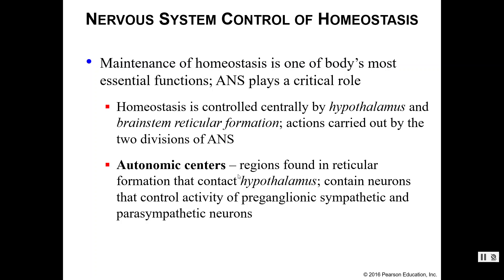Within your reticular formation you have autonomic center regions. They are what are contacting the hypothalamus directly. These neurons control the activity of your preganglionic neurons for both your sympathetic and parasympathetic divisions. These autonomic centers in the reticular formation will communicate with the hypothalamus and send the plan through the preganglionic neurons, whether it be the sympathetic branch or the parasympathetic branch.